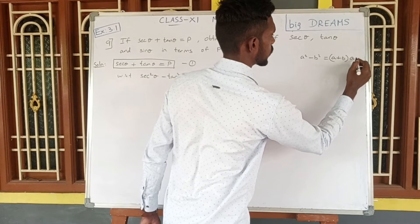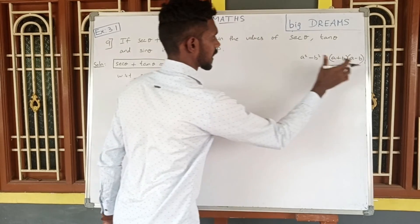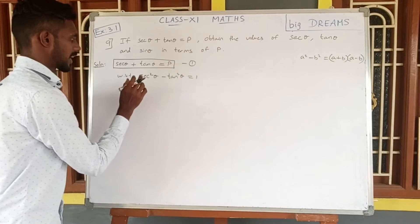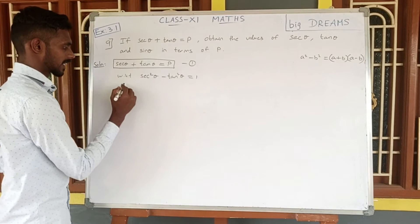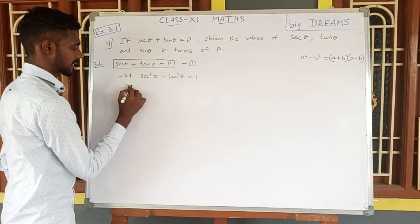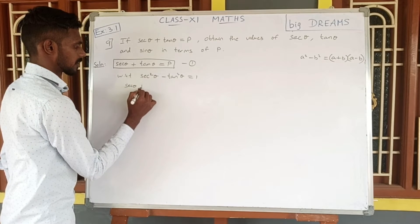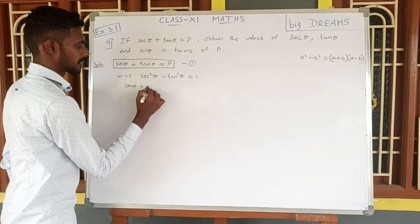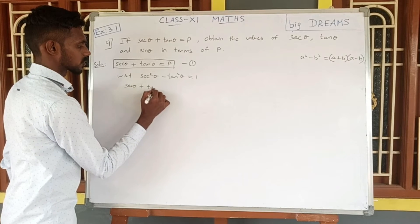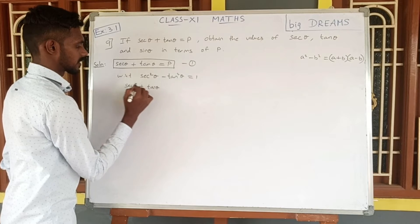Now let us apply the identity A minus B. Let A be secant theta and B be tan theta. So we have secant theta plus tan theta.